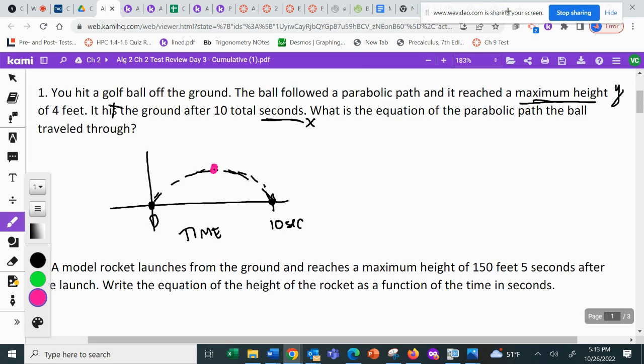So it follows a parabolic path. It says that it reaches a maximum height of four feet. So the maximum height is going to be four. Now, I don't know the Y or the X value here, but you should be able to find it out knowing that the maximum height has to do with our vertex. So there's your first picture.